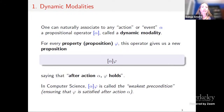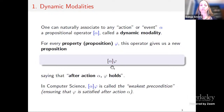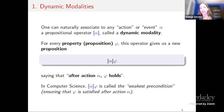So, dynamic modalities. One can naturally associate with any action or event alpha — think about any physical action — a propositional operator, which I write as box alpha. I call this a dynamic modality. For every property or proposition phi, this dynamic modality gives me a new proposition, denoted box alpha phi. The reading is: after the action alpha, phi holds. In computer science, this construct is known as the weakest precondition, ensuring that phi is satisfied after an action alpha.